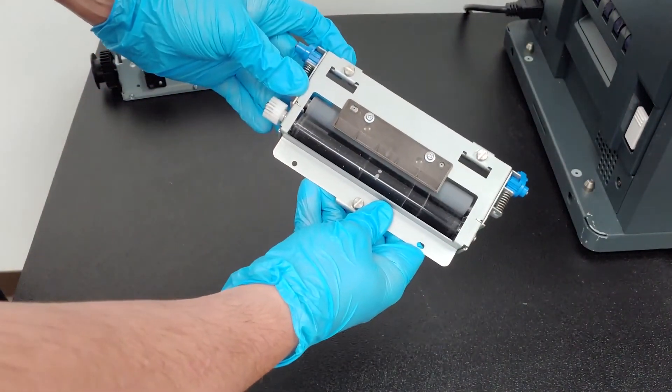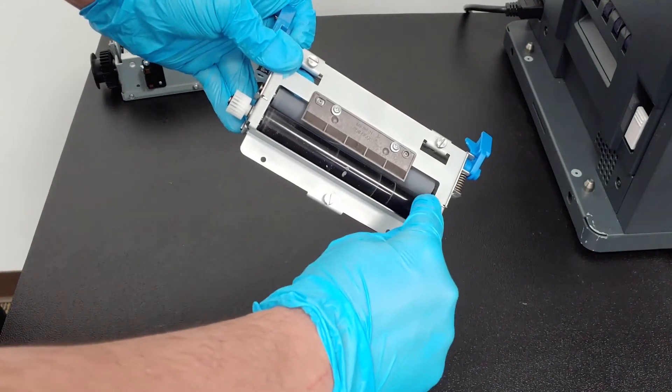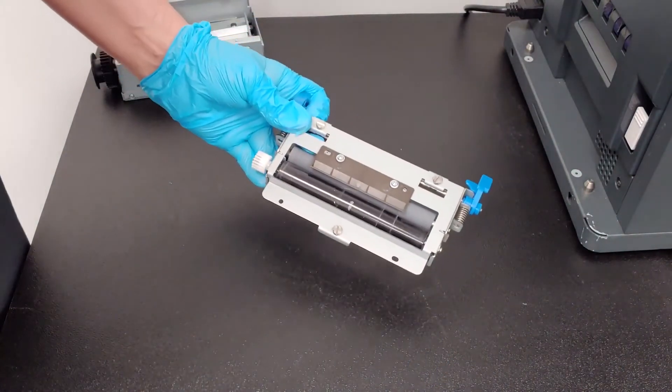Lift this lever to its upright position until there is a visible gap between the top and bottom rollers. Then set the assembly on its side.